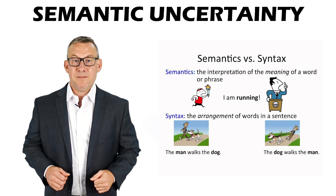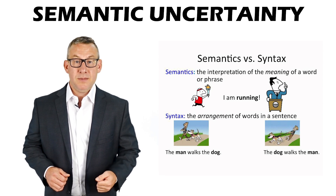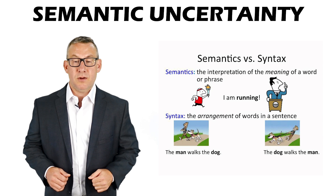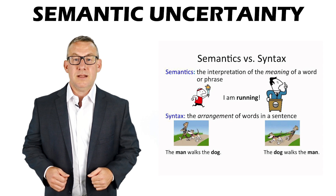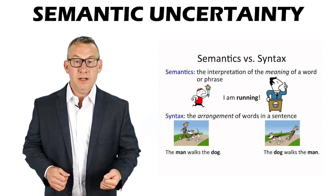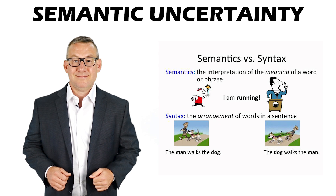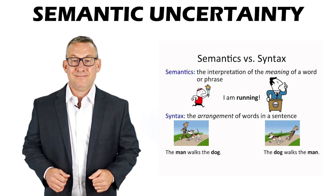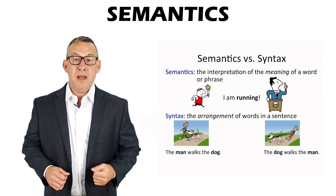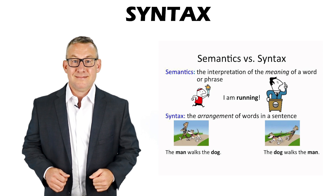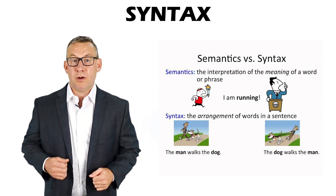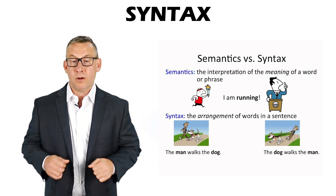Semantic uncertainty is the uncertainty that arises from discrepancies in the meanings applied to spatial data. This often results from ambiguity and vagueness. Semantics is closely related to syntax. Semantics is the meaning of words. Syntax is the structure of a language, or how the words work together.